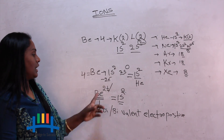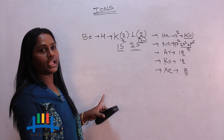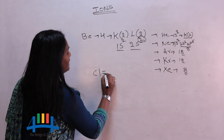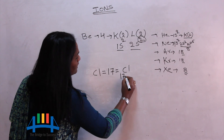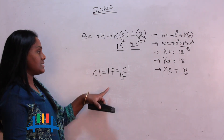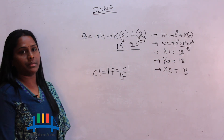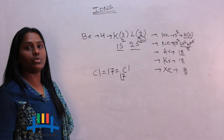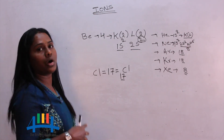Now let's look at the formation of an electronegative ion. Let us take the example of chlorine. Chlorine has atomic number 17, and its nearest noble gas is argon with atomic number 18, which is a very stable element. To become like argon, chlorine must gain one more electron into its outermost shell.